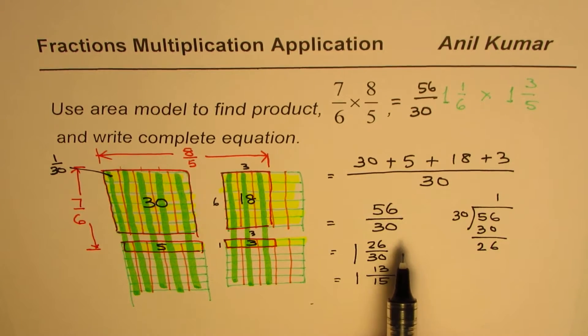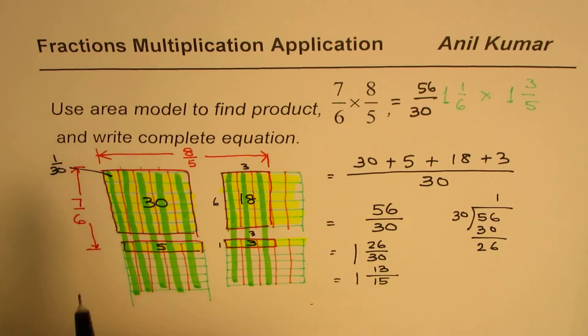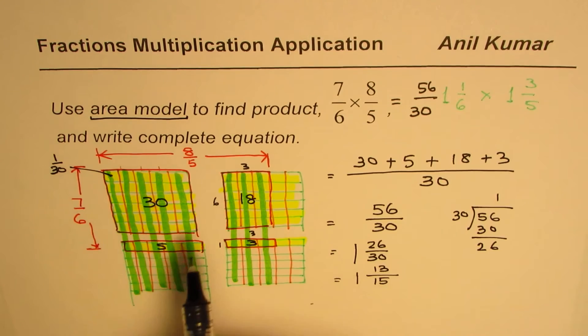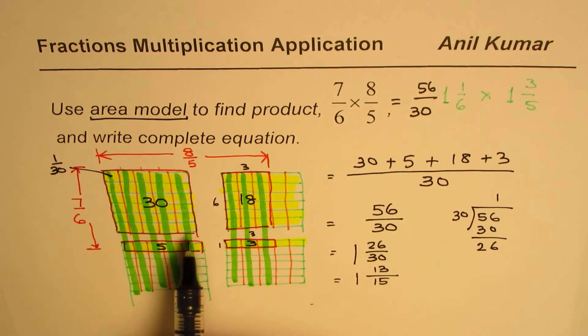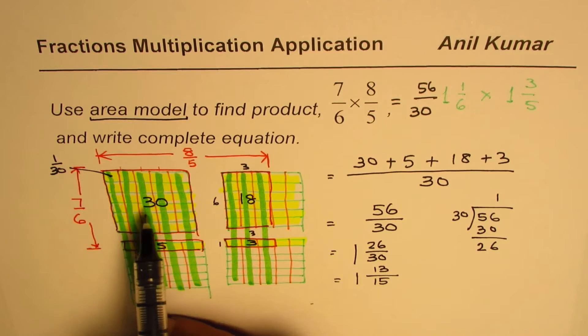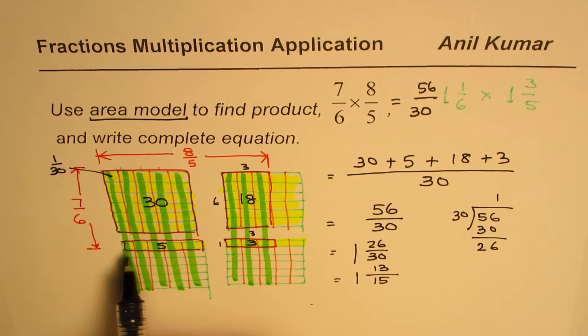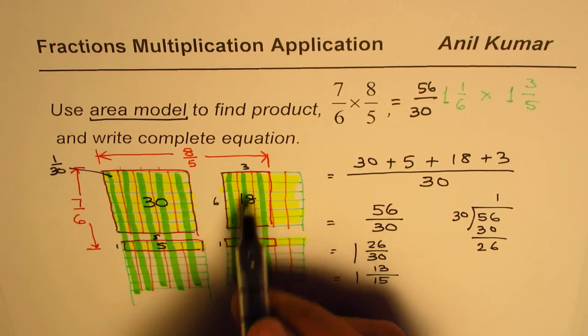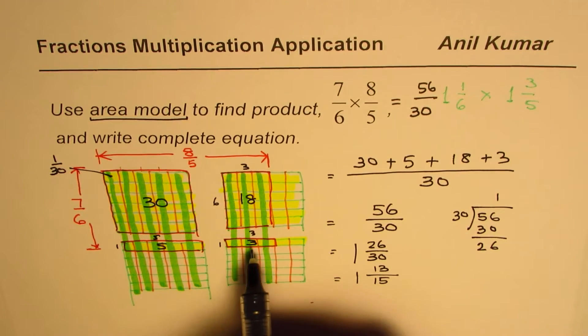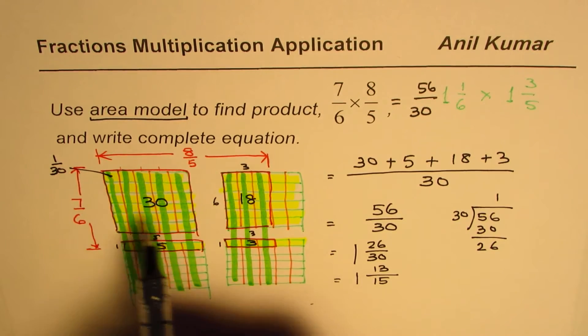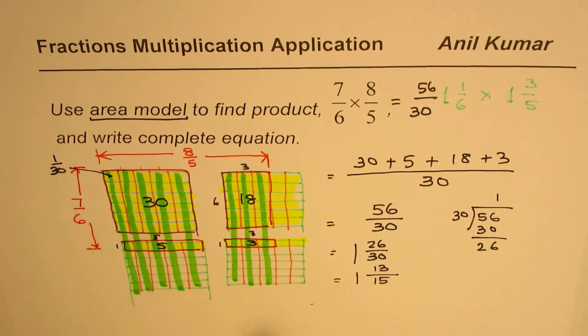So the idea here is to show multiplication using area model. Right. So I hope you understand area model now. So here is the area. Area of this big cell here is number of rows times columns, which is 30. Right. Then this one is 1 times 5, which is 5, 6 times 3, 18, 1 times 3, 3. And out of 30. Right. So each unit is 1/30.